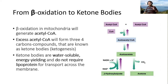Let's see the picture on the right side. We have two molecules of acetyl-CoA. This acetyl-CoA will convert into acetoacetyl-CoA, and this acetoacetyl-CoA will be converted into acetoacetate. This acetoacetate can be converted into acetone by releasing carbon dioxide. Acetoacetate can also be converted into beta-hydroxybutyrate by oxidizing NADH into NAD+.